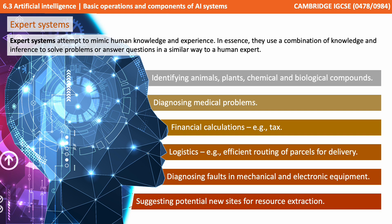There are some examples here of how they are used. They can be used to identify animals, plants, chemical and biological compounds. Diagnose patients and their illness. Carry out financial and tax calculations. Logistics such as efficient routing of parcels for delivery. Diagnosing faults in mechanical and electronic equipment. And suggesting potential new sites for oil and other resource extraction.